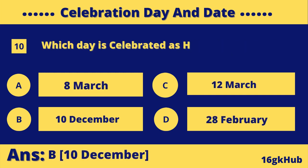Which day is celebrated as Human Rights Day? Option A: 8th of March. Option B: 10th of December. Option C: 12th of March. Option D: 28th of February. The correct answer is Option B: 10th of December.